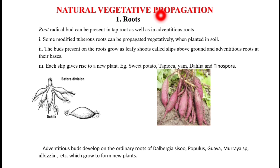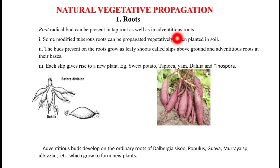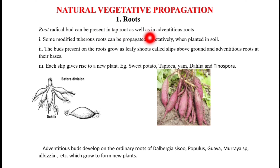Natural vegetative propagation through roots: buds in roots can be present in tap roots as well as in adventitious roots. In tap roots, examples include Dalbergia, Albizzia, Moraya, and Populus.